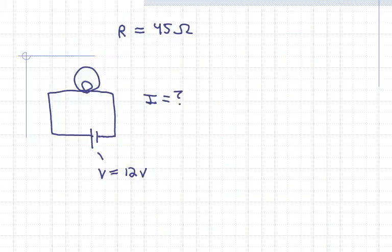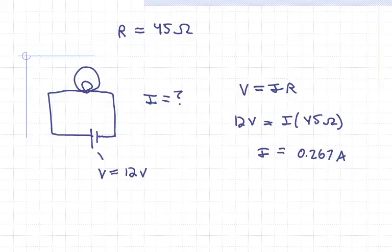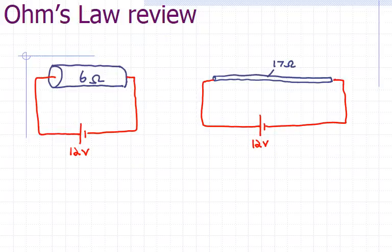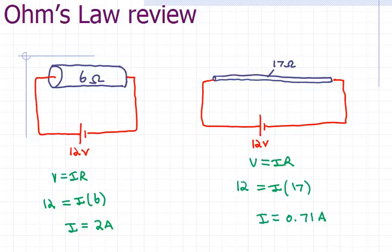Let's try a basic Ohm's Law problem. Pause the clip and try it — when you're ready to check, hit play. We should get 2.67 amps; V = IR, pretty straightforward. Now we have two conductors — the one on the left is 6 ohms, and the one on the right is 17 ohms because it's so long and skinny, giving it more resistance. Comparing the current: on the left you should get 2 amps, and on the right 0.71 amps — obviously less current on the right because there's more resistance.